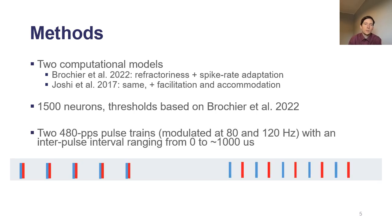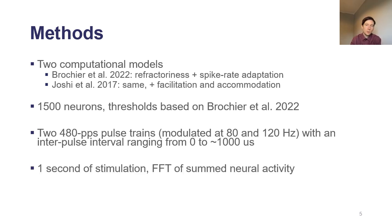The stimuli were two 480 pps pulse trains modulated at 80 and 120 Hz and separated by variable intervals ranging from 0 to 1,000 microseconds. That is, they were either right next to each other or at the worst equidistant. We then measured some neural activity at 40 Hz over one second.